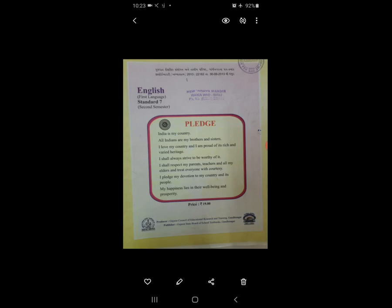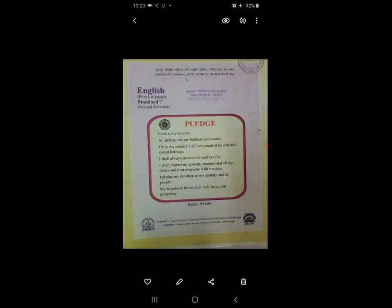उसके बाद में है Activity 5: work with your partner and list your daily activities where energy and electricity is used directly और indirectly. हम electricity का use directly या indirectly use करते हैं, उसके बाद में आपको लिखना है. For example, fan है वो directly use होता है — पंखा चालू करते हैं, switch दबाते हैं, चालू हो जाता है — यह direct use हुआ.